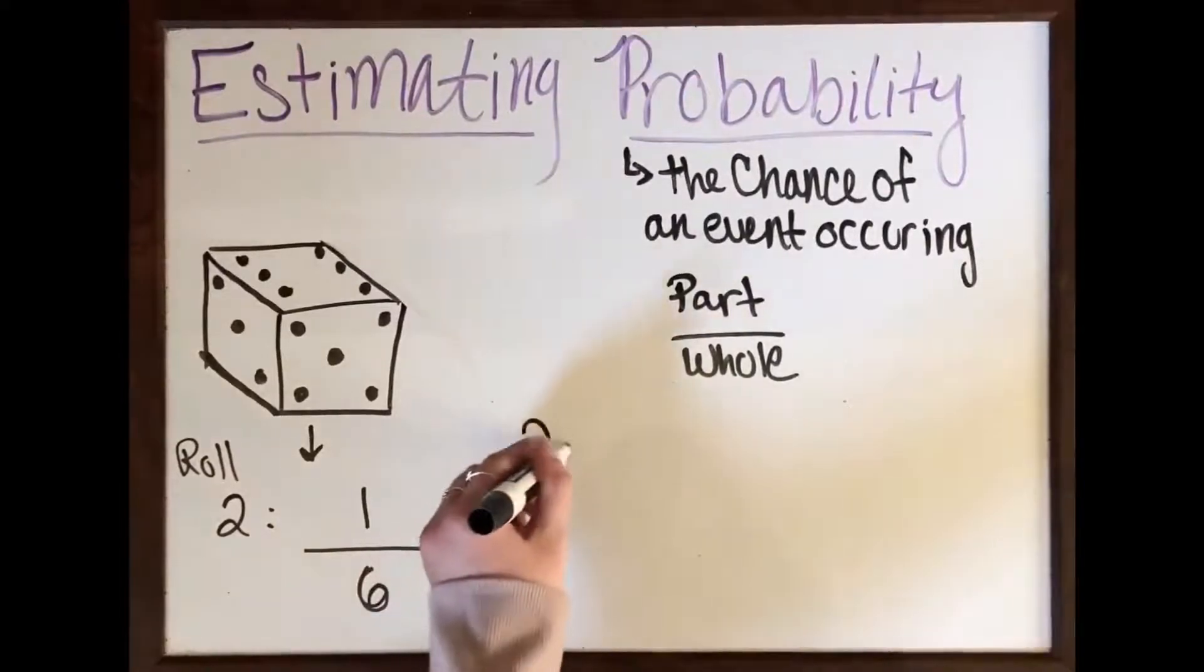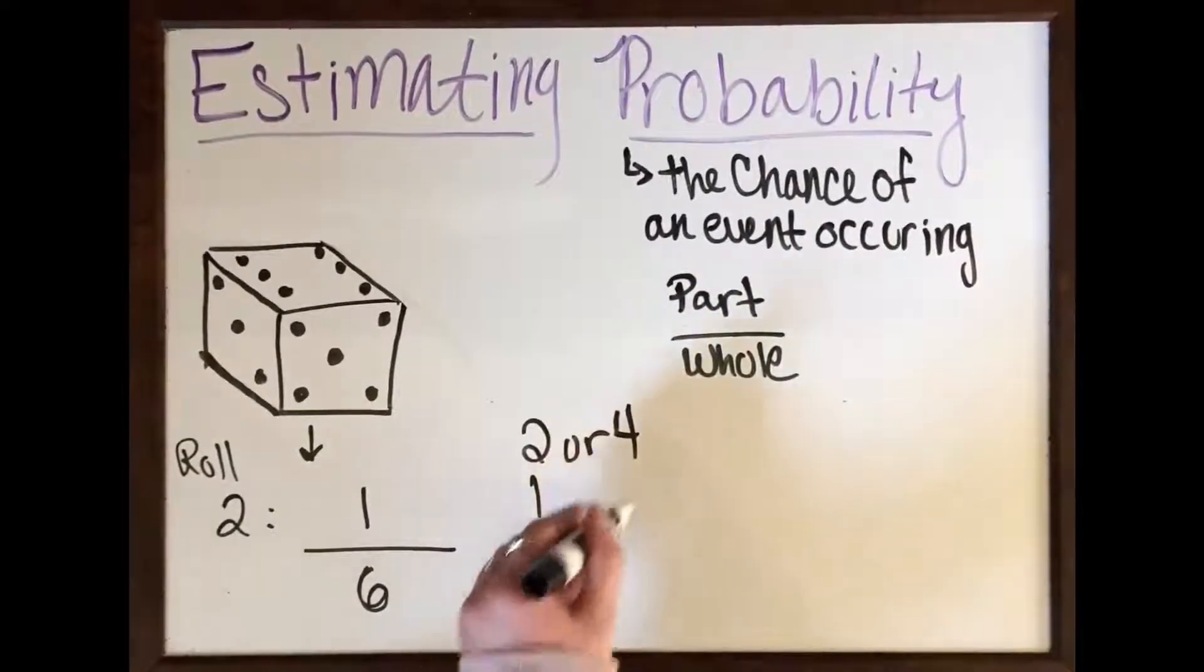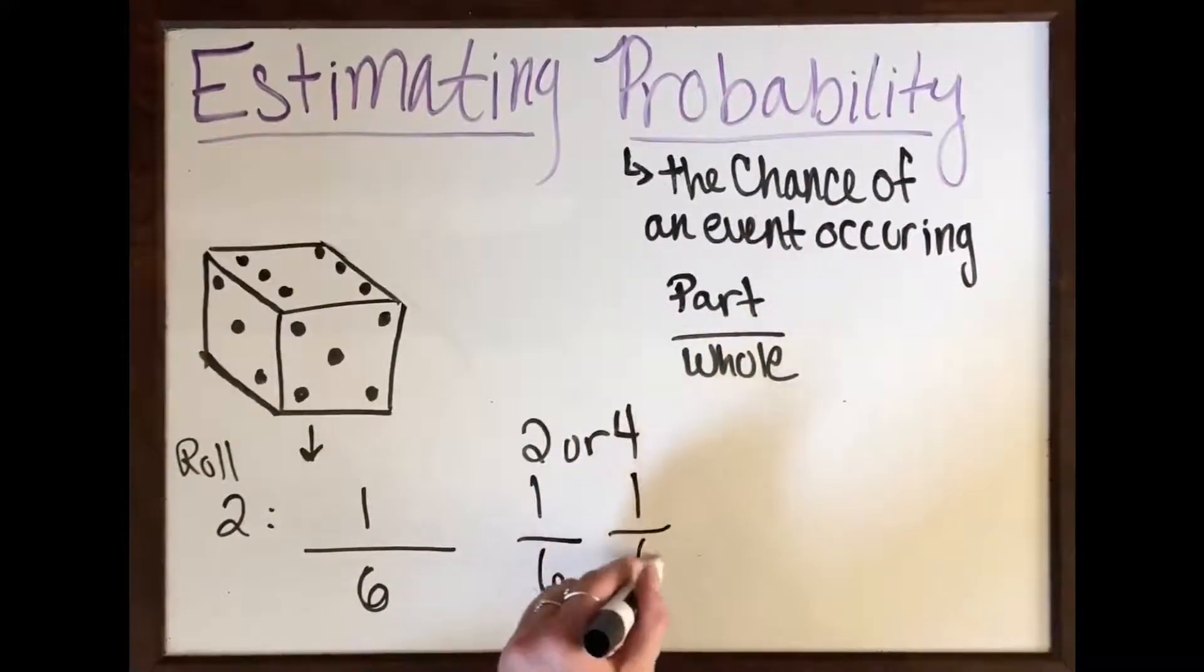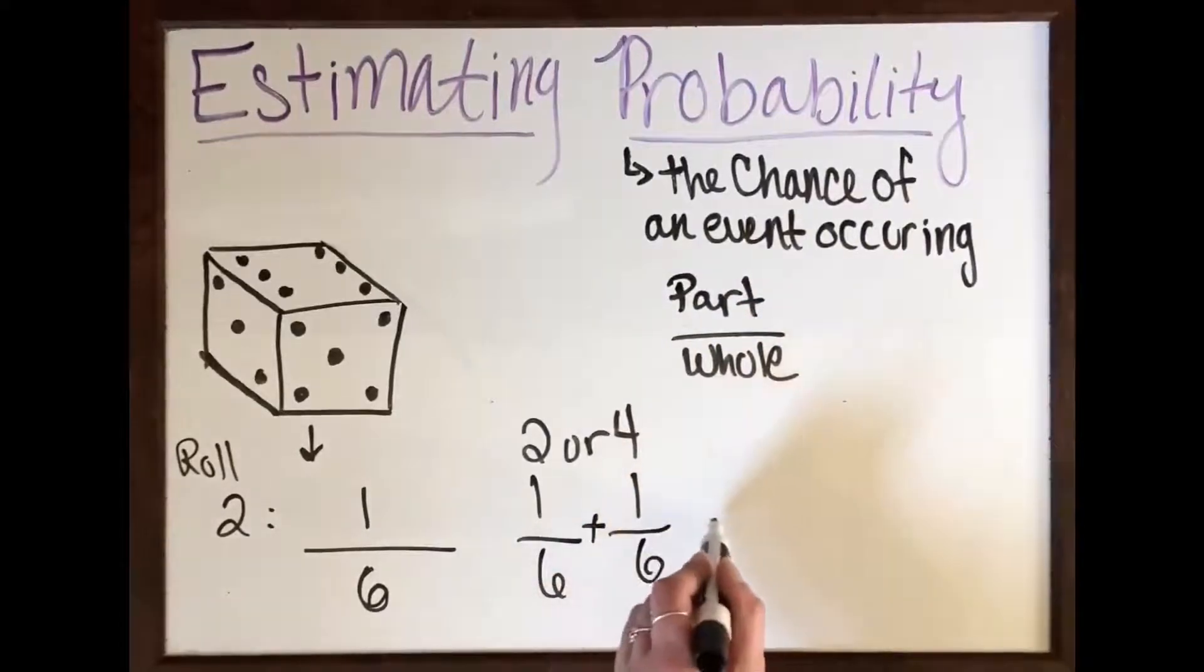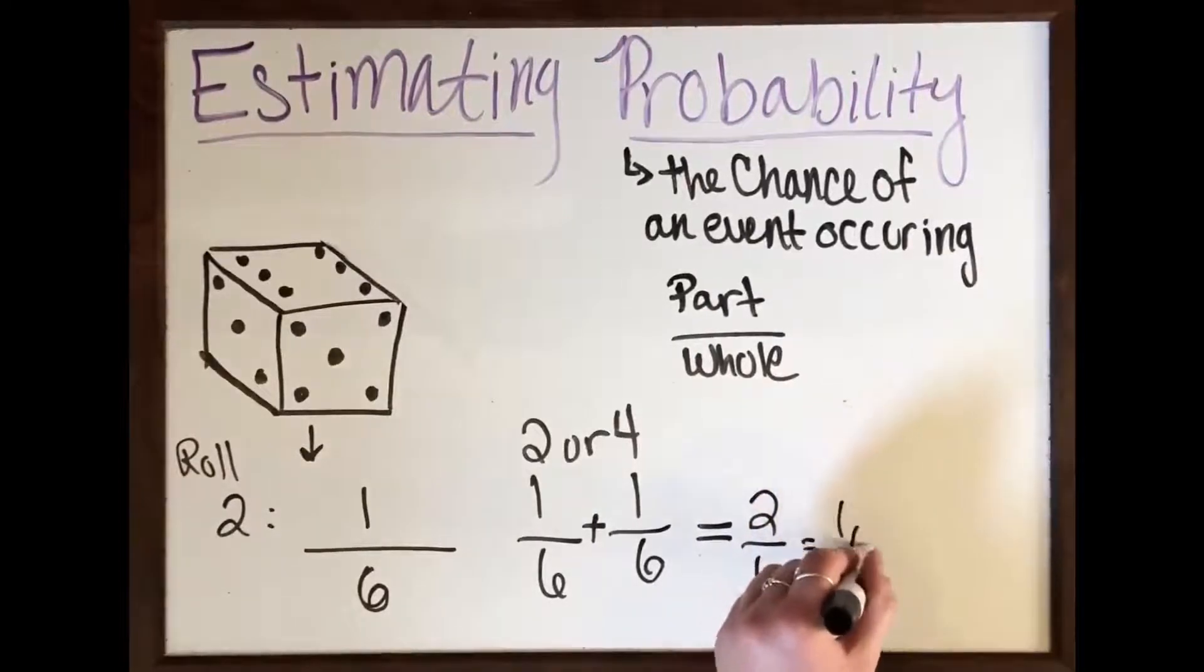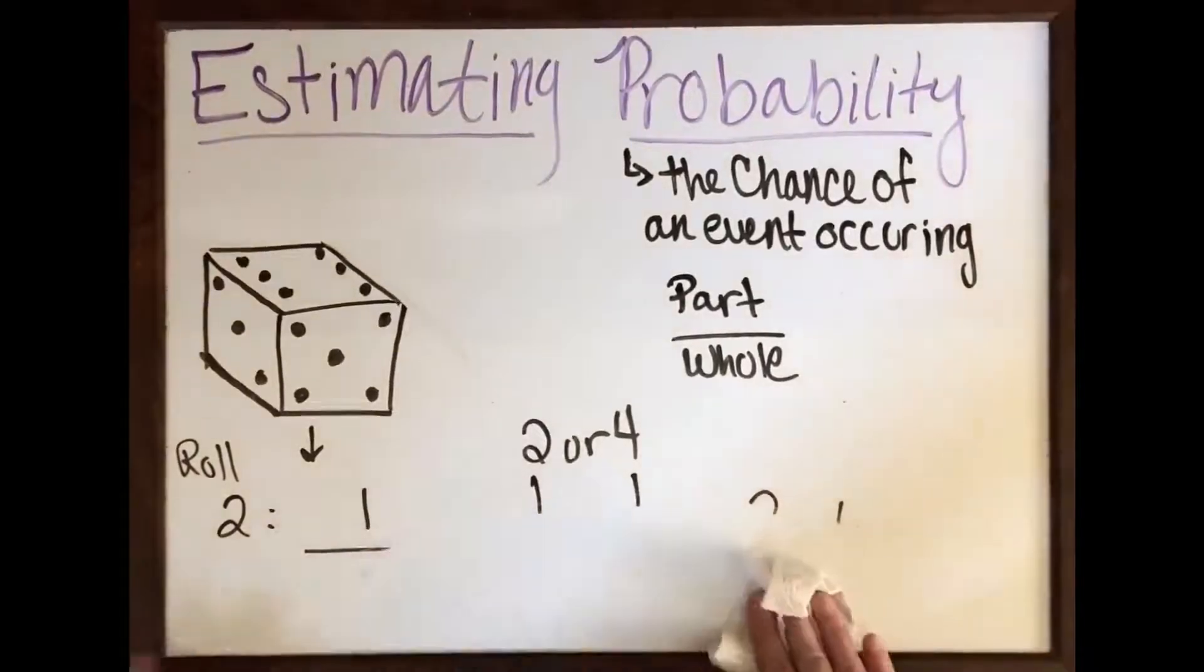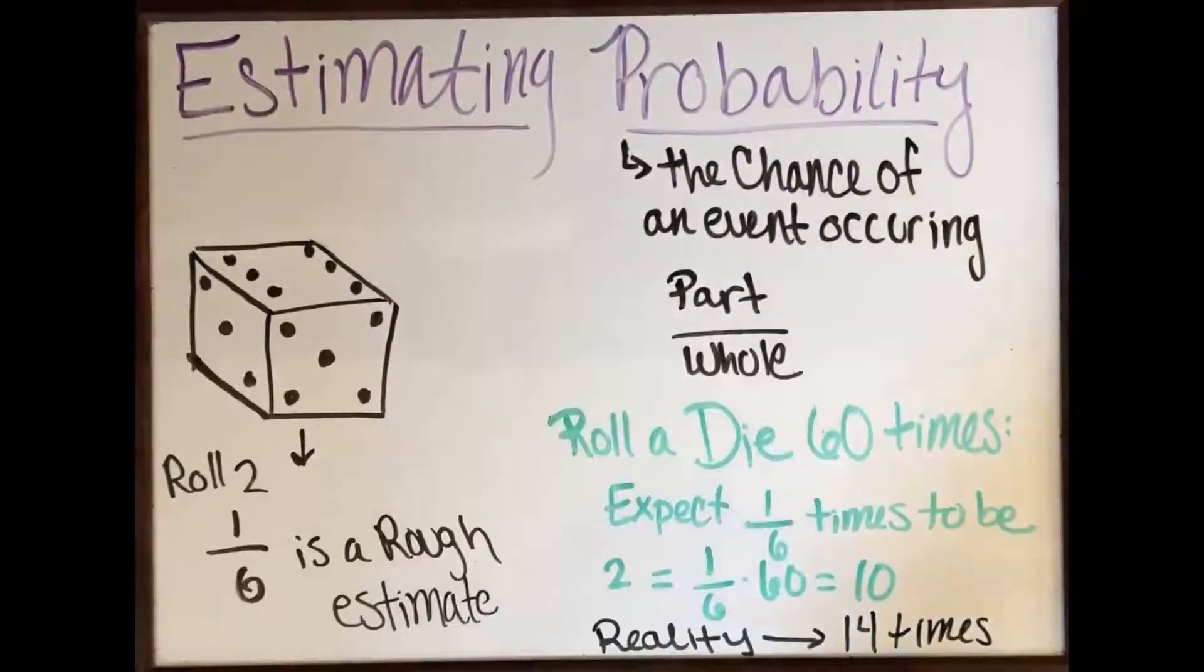So if we want to roll a two or a four, if each has a one sixth probability, then our chances of rolling a two or four would be two six, which equals one third. One third is closer to one than one sixth, so we have a better chance of rolling a two or four than just rolling a two.